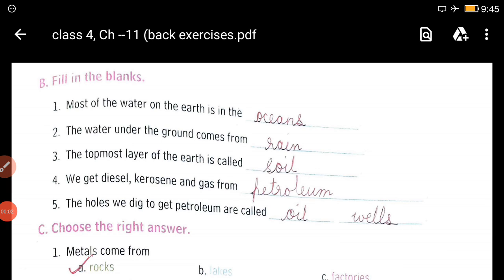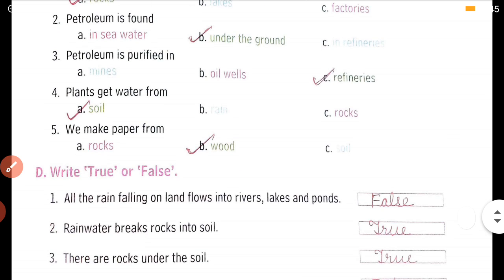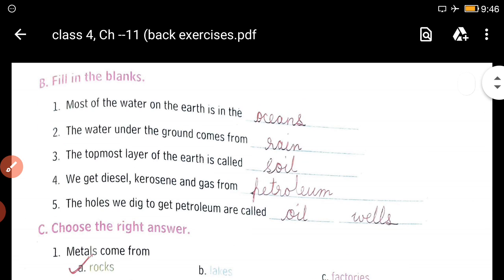Good morning children, so let's start the work of EVS today. We will do the back exercises of chapter 11, Natural Resources. There is fill in the blanks, there is choose the correct option, and there is write true and false. We are going to do all three now, let's see one by one.